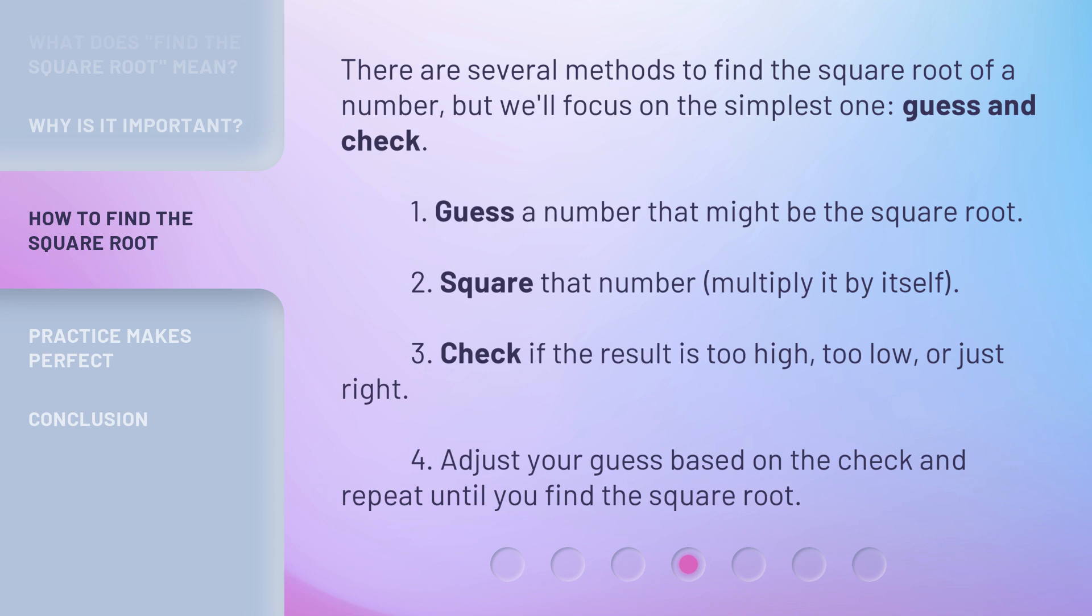1. Guess a number that might be the square root. 2. Square that number (multiply it by itself). 3. Check if the result is too high, too low, or just right. 4. Adjust your guess based on the check and repeat until you find the square root.